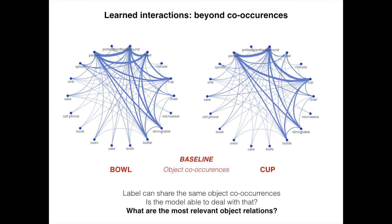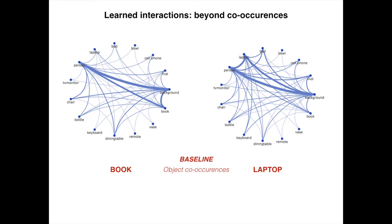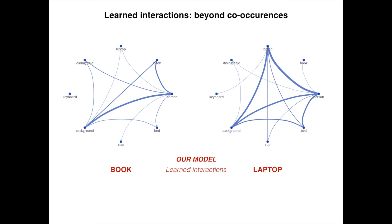The baseline plots illustrate object co-occurrences for a given class, here shown for the classes bowl and cup. These baseline co-occurrence graphs do not involve any knowledge of the trained model. We propose graphs which show the learned object interactions extracted from the learned activations of the Object Relation Network. The graph is sparse compared to the co-occurrence graph — the model focuses on the important and relevant pairwise object relationships.